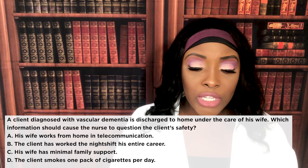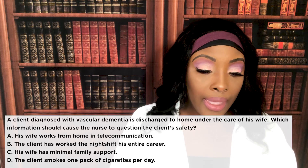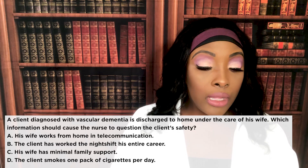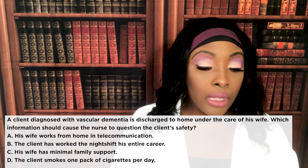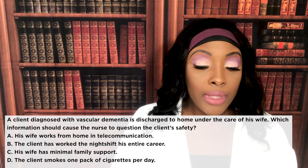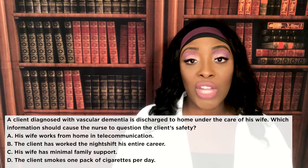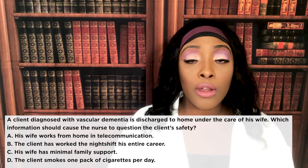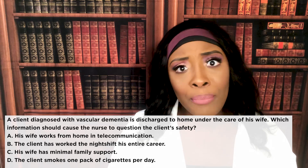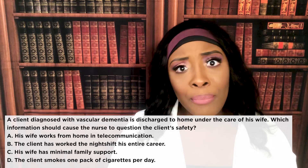A client diagnosed with vascular dementia is discharged to home under the care of his wife. Which information should cause the nurse to question the client's safety? A: The wife works from home in telecommunication. B: The client worked the night shift his entire career. C: His wife has minimal family support. D: The client smokes one pack of cigarettes per day. The correct answer is D — the client smokes one pack of cigarettes per day.